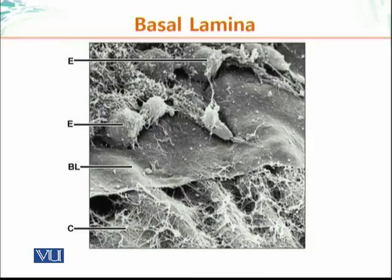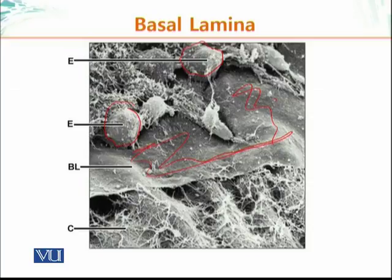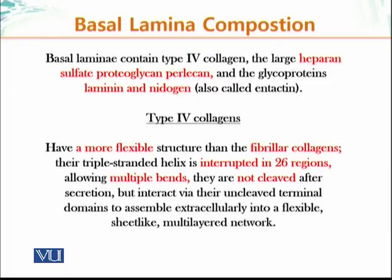In the scanning electron micrograph, the round objects are epithelial cells resting on a mat — this is the basal lamina. The whole surrounding surface is connective tissue extracellular matrix material, and underneath the basal lamina we have connective tissue where type 7 collagen molecules attach the extracellular matrix to the connective tissue.